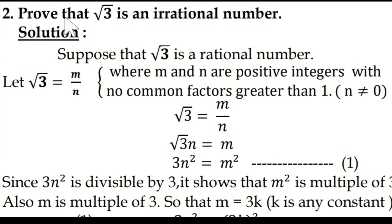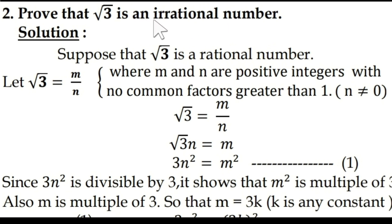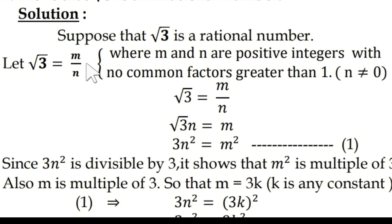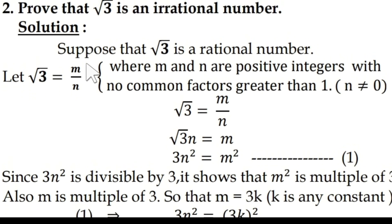We are going to prove that root 3 is an irrational number — that is, to prove root 3 is not a rational number. So opposite, as in proof by contradiction. Suppose that root 3 is a rational number. Let us consider what will happen.